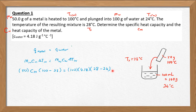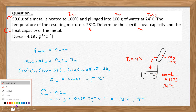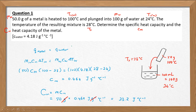Solving the equation gives the specific heat capacity of the metal equals 0.464 joules per gram per degree Celsius. Note: the unit for specific heat capacity is joules per gram per degree Celsius. To find heat capacity — unit: joules per degree Celsius — we multiply mass by specific heat capacity: 50 grams times 0.464 J/g°C. The grams cancel, giving a heat capacity of 23.2 joules per degree Celsius.